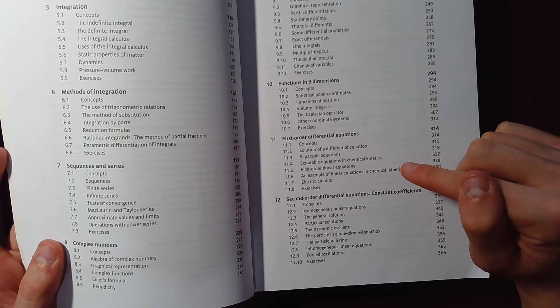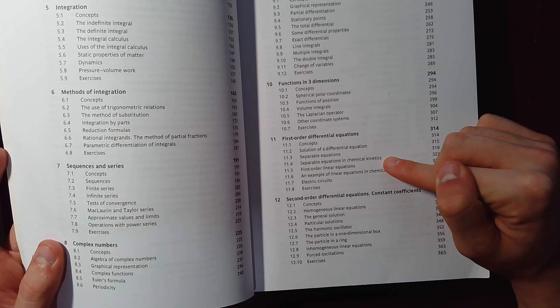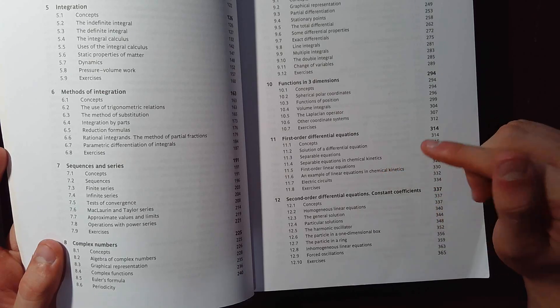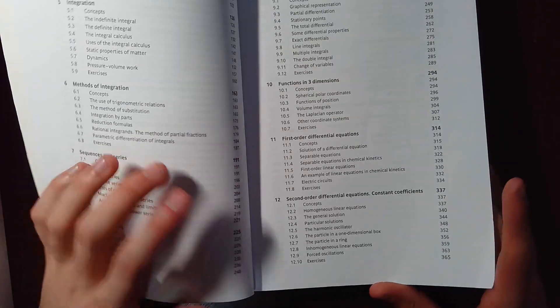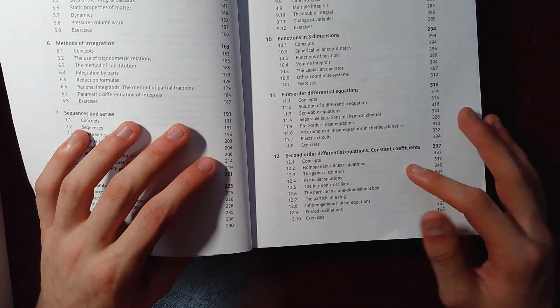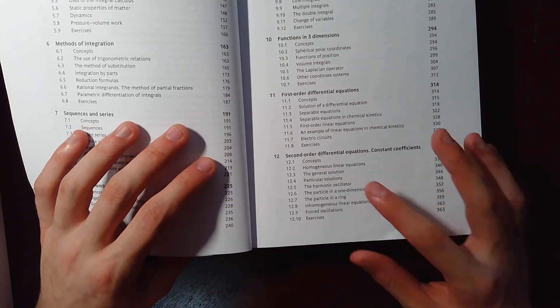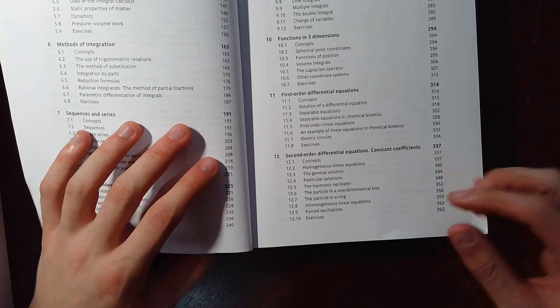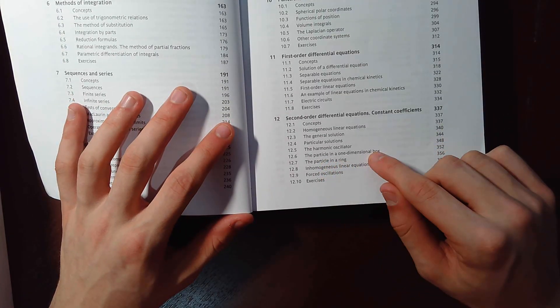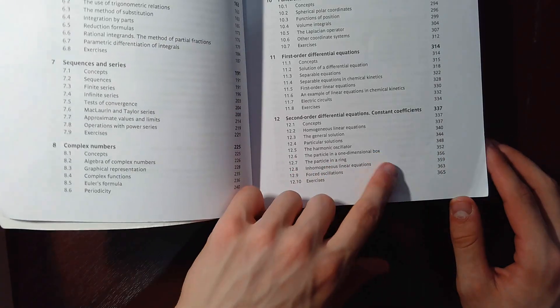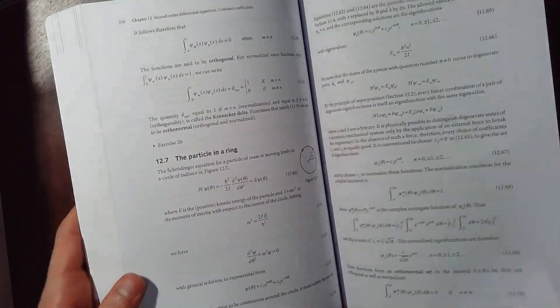Then it goes into some examples. So separation of equations in chemical kinetics. Goes into electrical circuits, which appears in physics a lot. Second order differential equations. So it goes into the harmonic oscillator. It even goes into a bit of quantum mechanics. So this stuff here, when they say the particle in a one-dimensional box and a particle in a ring, if we go to page 352, that's actually quantum mechanics.